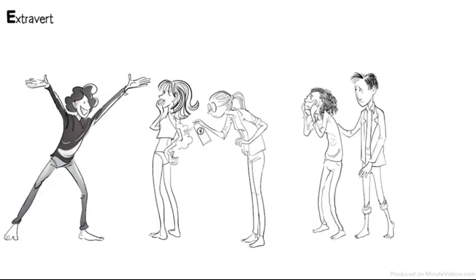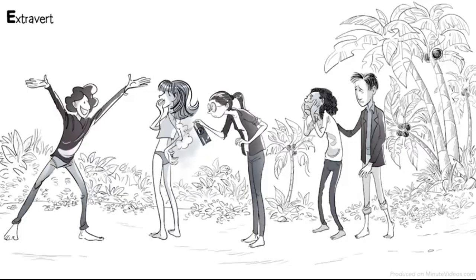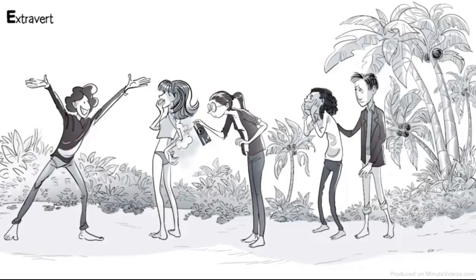Extrovert Emil is thrilled because they all survived. He feels a strong need to talk and share his happiness. He gathers everyone to celebrate their survival and to tell them about his plan to explore the island together.